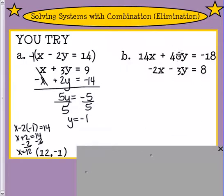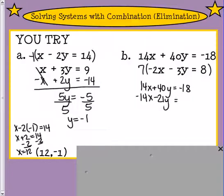So there's no real easy way to get from 3 to 40. So instead, there's an easy way to get from 2 to 14. Multiply by 7. So we've got 14x plus 40y equaling negative 18. And 7 times negative 2 is negative 14, 7 times negative 3 is negative 21y. And 7 times 8 is 56.